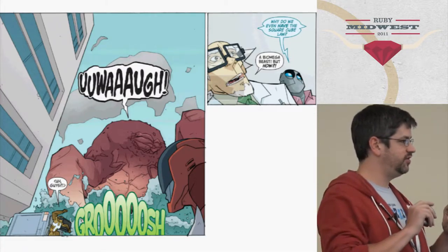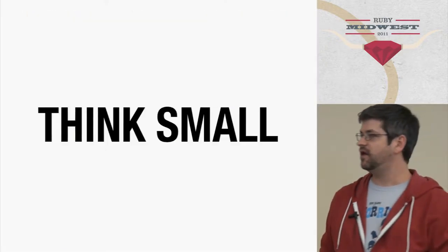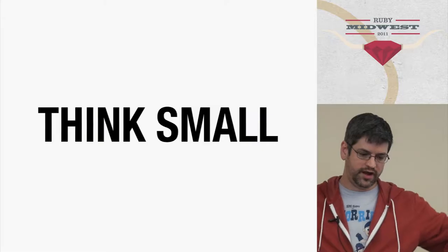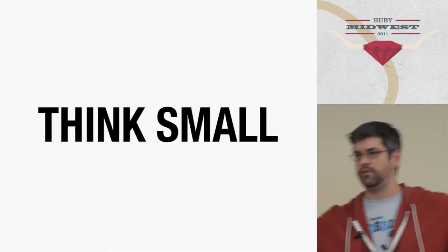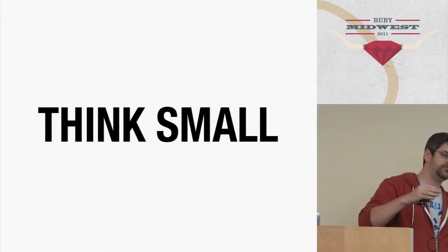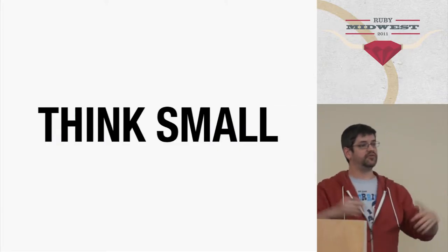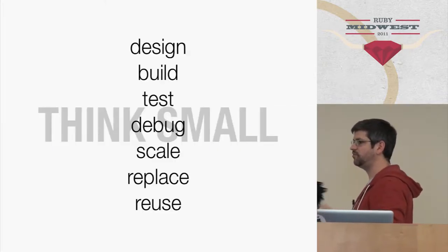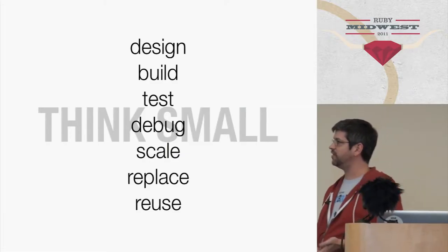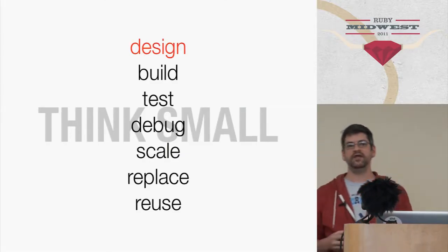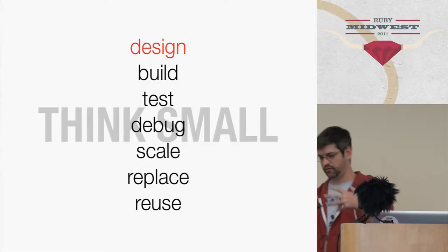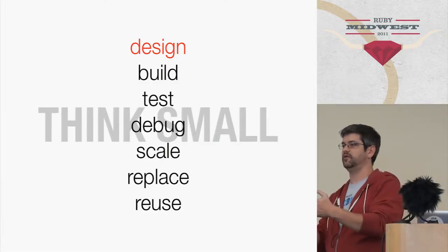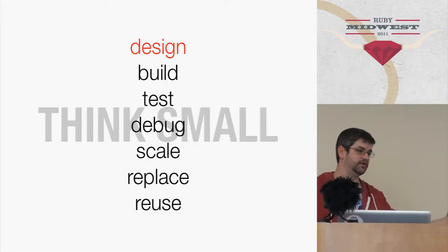What I want to do is point out that there's a different way: thinking small. If the big organic growth blob thing is one approach, we could also look at the exact opposite where we have lots of little things that all work together. The reason we should bother is because small things are easier to design. It's way easier to plan out an application that only does one tiny thing — like user authentication — than one that does 50 different things.